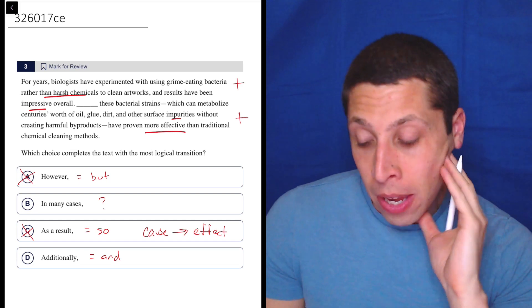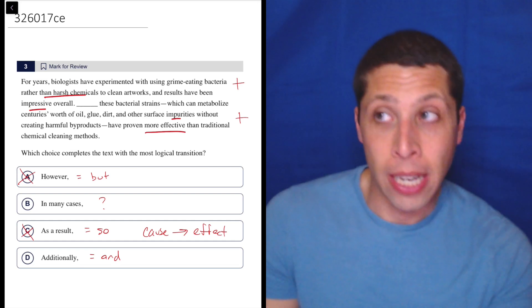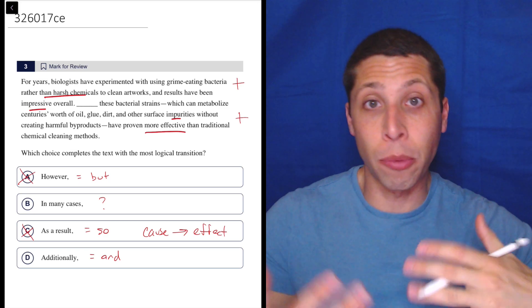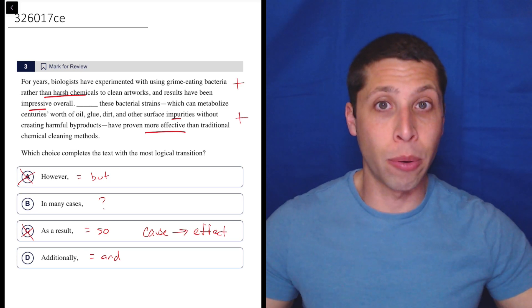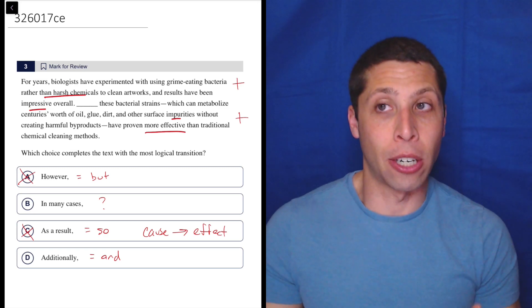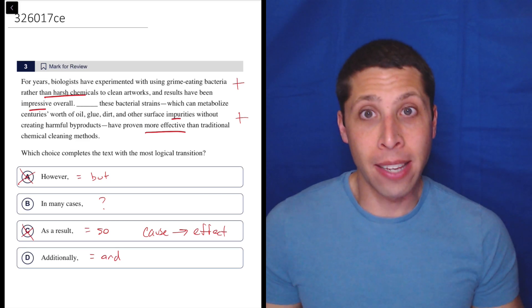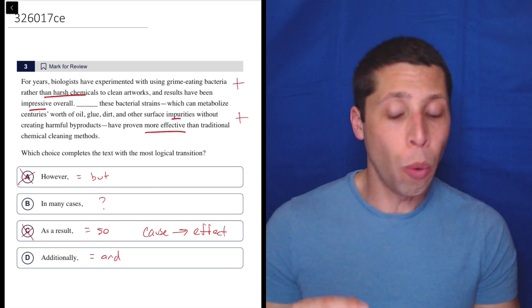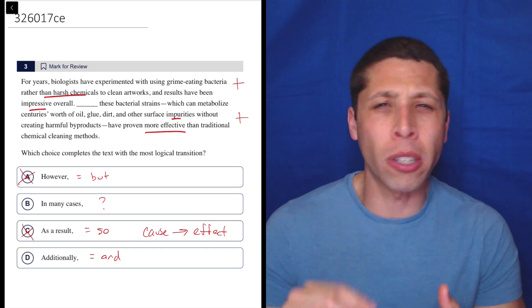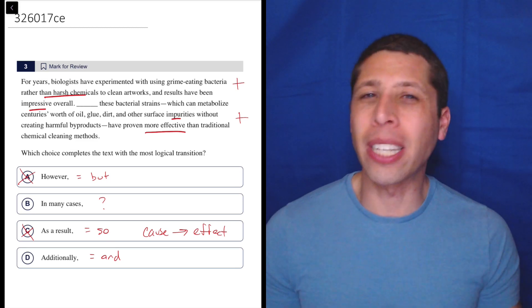Now, additionally is basically a fake transition. It doesn't really do anything at all. Basically just means that we're going to continue whatever thought we had. So it doesn't add any real meaning here. So the only reason we pick it is if nothing else worked. And that's usually how you want to approach words like additionally or moreover or furthermore. They're only right when everything else is wrong.